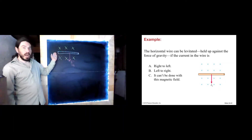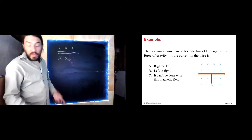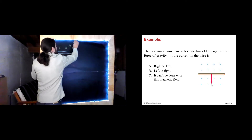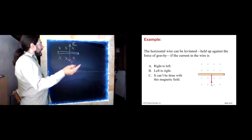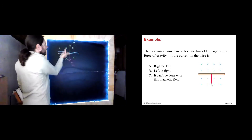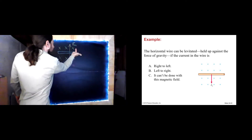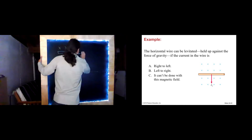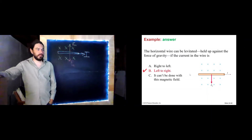So here's my picture. I have my wire and the force of gravity down in my field. If we are going to have the magnetic force levitate the wire — oppose the force of gravity — that means my magnetic force has to be up. So now let's get out our right hand. Here we have a field into the page and a force that's up. That means the current has to be going to the right. Field is in, force is up, current has to be to the right. And indeed, PowerPoint agrees.